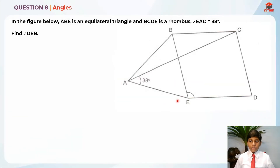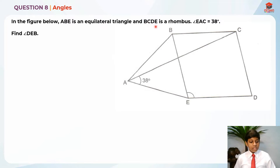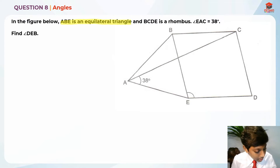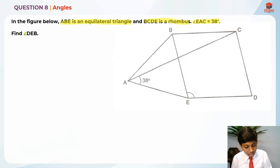This over here is question 8 and this question is testing us on angles. Let's read the question first. In the figure below, ABE is an equilateral triangle and BCDE is a rhombus. Angle EAC equals 38 degrees. Find angle DEB. Now that we've read the question, let's highlight the key information.